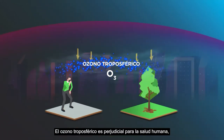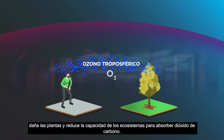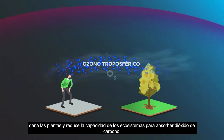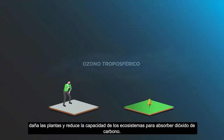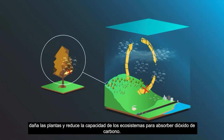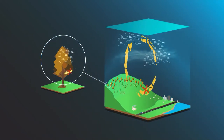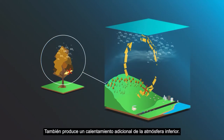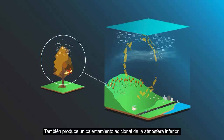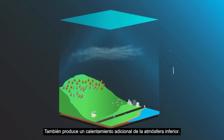Tropospheric ozone is harmful to human health, damages plants and reduces the capacity of ecosystems to absorb carbon dioxide. It also leads to additional heating of the lower atmosphere.